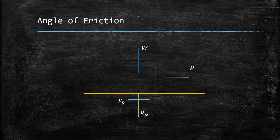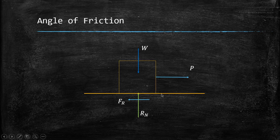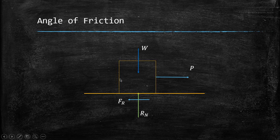Next, the angle of friction. Consider a free body diagram of a block on a floor. Forces acting include self-weight W, normal reaction from the floor, and the applied force for movement. When force is applied, the frictional resistance acts as a reactive force.